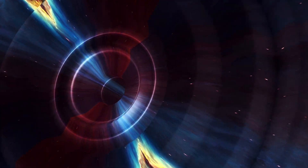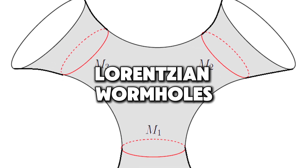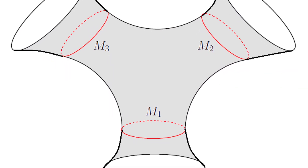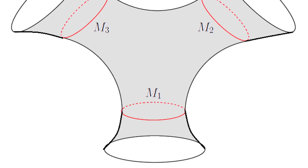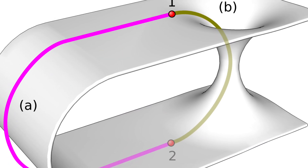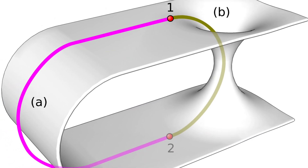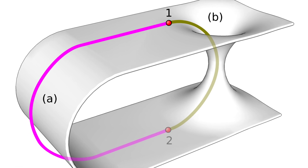Lorentzian wormholes are a class of traversable wormholes described by solutions to Einstein's field equations. These wormholes are characterized by their geometry and require exotic matter to prevent collapse.